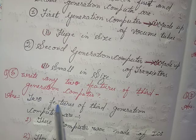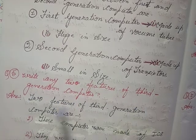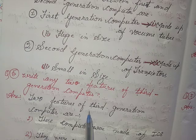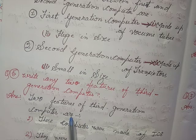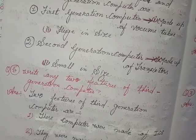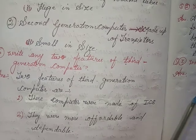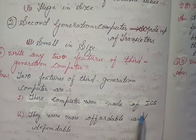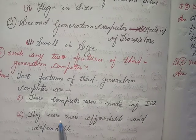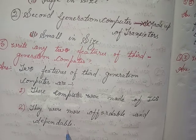Five, write any two features of third generation computers. Answer: Two features of third generation computers are — first, these computers were made up of ICs (Integrated Circuits); second, they were more affordable and dependable.